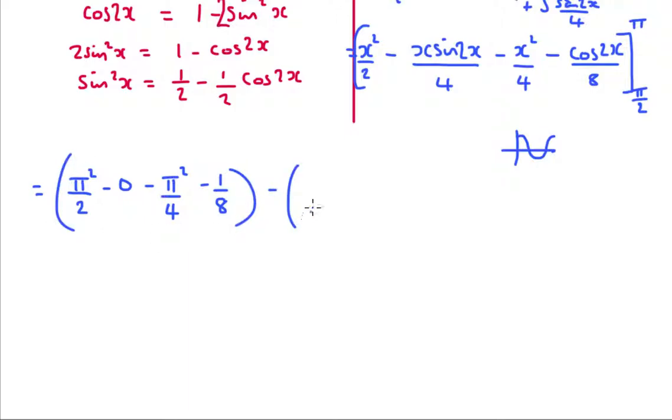For pi over 2, we're going to have pi squared over 2 squared, times the 2 as well, so that's going to be over 8. Sine of pi is 0 again, so this is going to be 0 for a second time. Here, we're going to have pi squared over 2 squared, which is 4, times 4 as well, which is 16. And here, we're going to have cos of pi, and cos of pi is minus 1, so that's going to be plus an 8th.